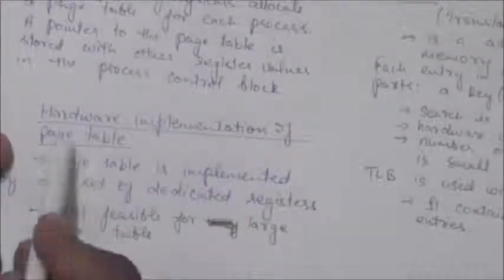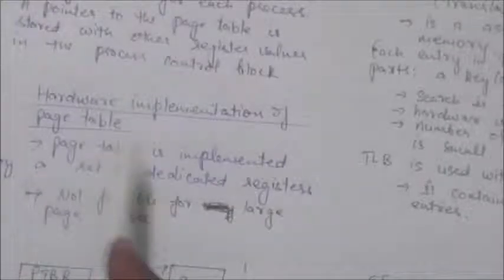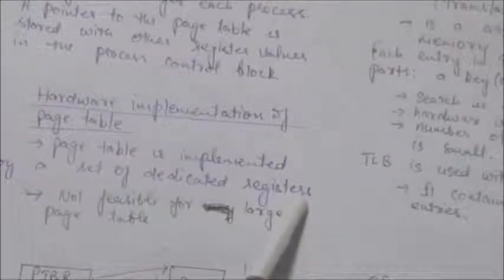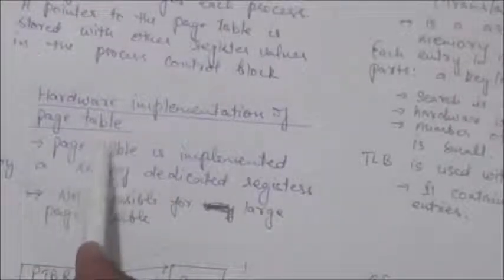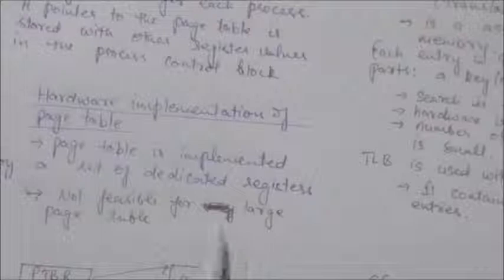There are several methods for hardware implementation of page tables. For example, the page table can be implemented by a set of dedicated registers. This is one method for hardware implementation of page tables.